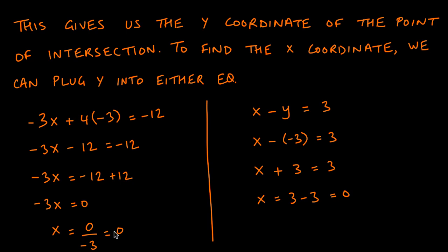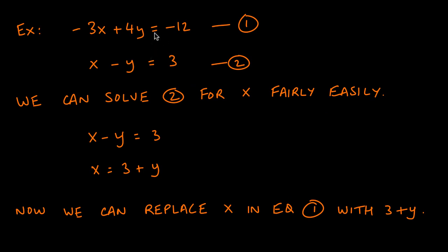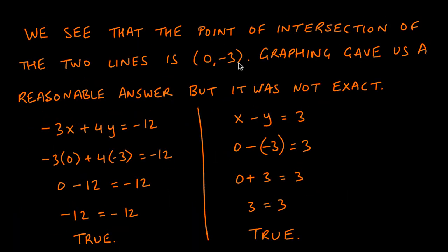To confirm, we can also plug y equals negative 3 into the second equation: x minus (negative 3) equals 3, so x plus 3 equals 3. Subtracting 3 from both sides gives x equals 0. This confirms the point of intersection of the two lines is zero comma negative 3.